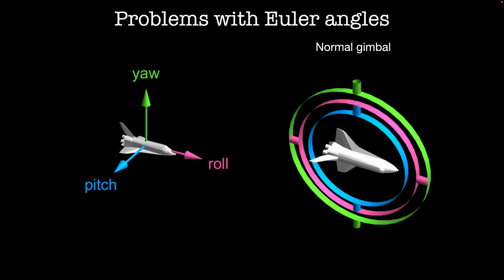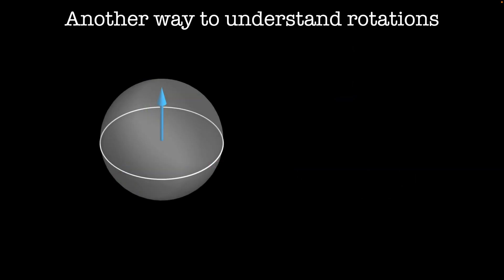Another problem is that interpolating between two rotation states using Euler angles doesn't make any physical sense, as you can see from the previous animation. Let's try to think about rotations in a totally different way.